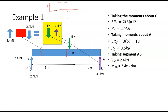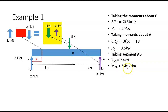Before looking at the other side, let's find the bending moment in region A to B. Taking a point at distance x from A, the shear force is 2.4 kilonewtons, so the bending moment is 2.4 multiplied by x — giving 2.4x kilonewton meters. That is the bending moment at this point.